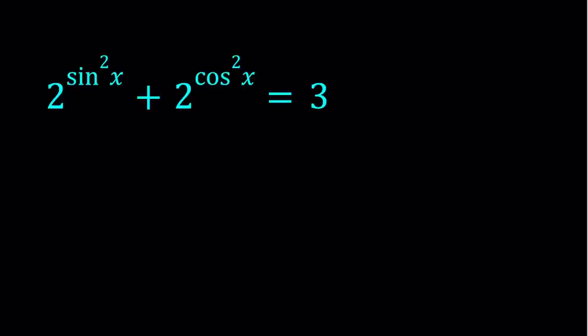So we have 2 to the power sine squared x plus 2 to the power cosine squared x is equal to 3. These types of questions are fairly common. You've probably seen them somewhere else with the same number or different numbers. They're competition level problems or maybe some Olympiad level problems but they're fairly easy to solve.